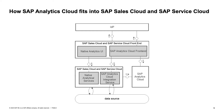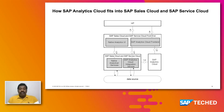In the front-end layer, apart from application-specific UI components, we have the native analytic UI and the SAP Analytics Cloud front-end component — that is the story interface. We also have an identity provider at the top. This is a common identity provider. We are connecting both SAP Sales and Service Cloud application as well as SAP Analytics Cloud application to the same IDP, so that we achieve single sign-on with SAML 2 authentication. As a business user, when I log into SAP Sales and Service Cloud, I don't need to log in again to access SAP Analytics Cloud stories.